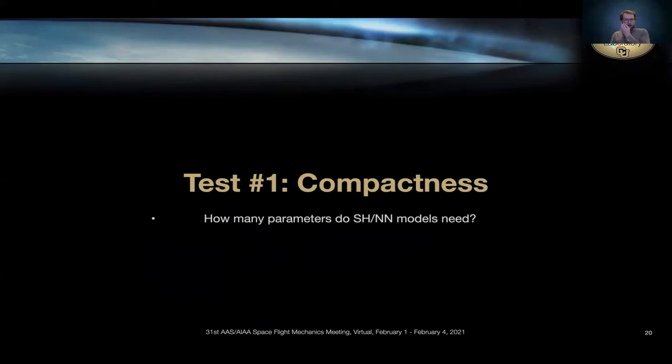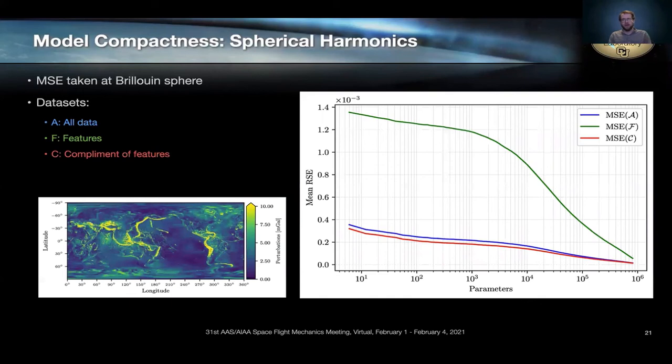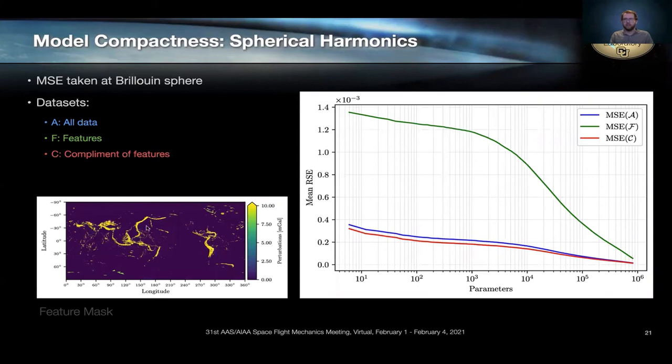I compare it with spherical harmonics in a number of ways, the first being compactness. And what I mean by that is how many parameters does a spherical harmonic representation need to model these features versus a neural network representation? So we start with spherical harmonics. What you see here is a map of the error of a spherical harmonic representation as a function of parameters. And the blue curve here is the average error taken across this entire map.